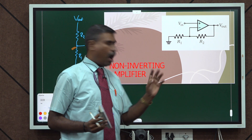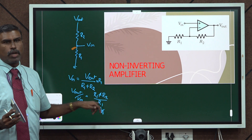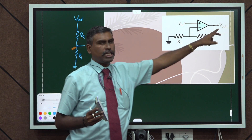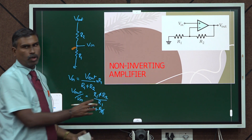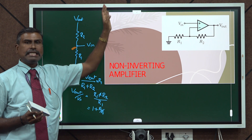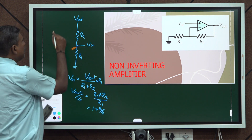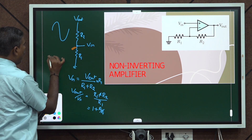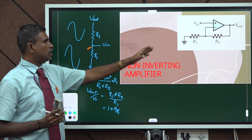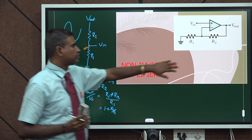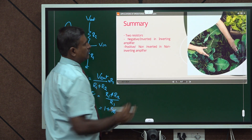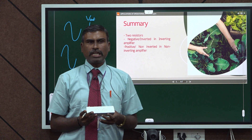If R2 equals R1, the gain becomes 2 — so applying 2 volts input gives 4 volts output. By adjusting the values of R2 and R1 we can set the gain to any desired value. For an AC voltage input, only the magnitude of the signal is amplified — no inversion takes place. This is the operation of the non-inverting amplifier.